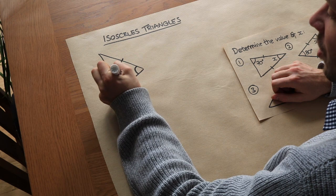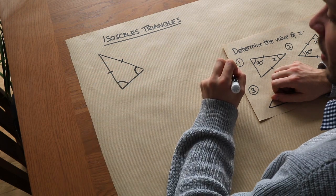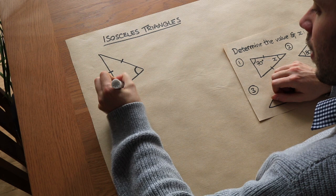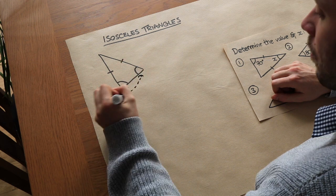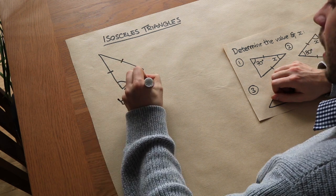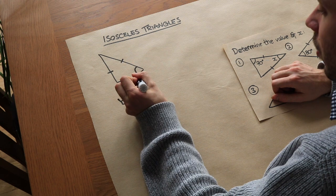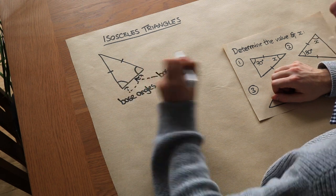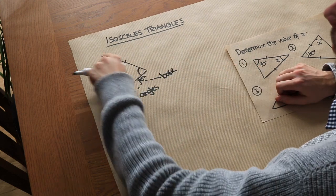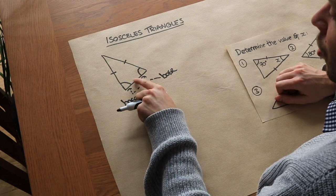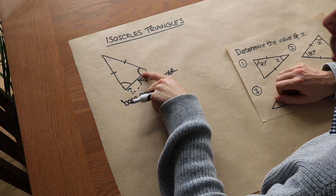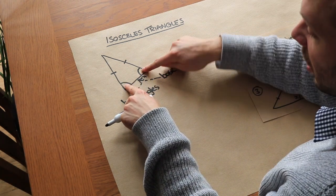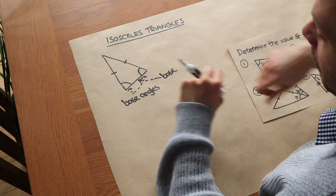But that would also mean that these two angles here are the same size. We call these two angles the base angles, because they lie on this side here, which is the base of the triangle. So in an isosceles triangle, the side that is not the same as the two others is known as the base, and the two equal angles on that base are known as base angles.